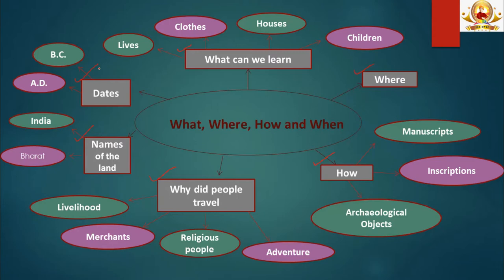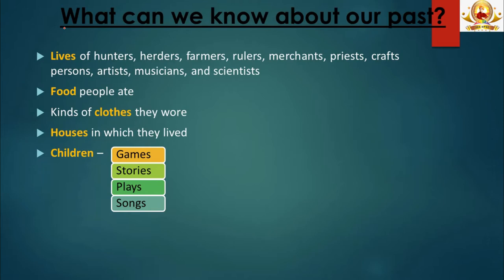So what can we know about our past? We learn about lives of different groups of people — their occupation, their culture, etc. We get to know about the food people used to eat, and when we study food, we learn about the procurement method. We also study the kinds of clothes people used to wear, which helps us understand the weather of that particular region and period.